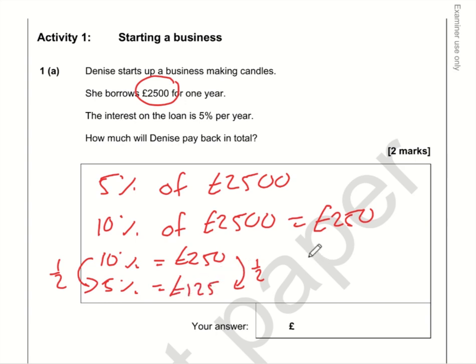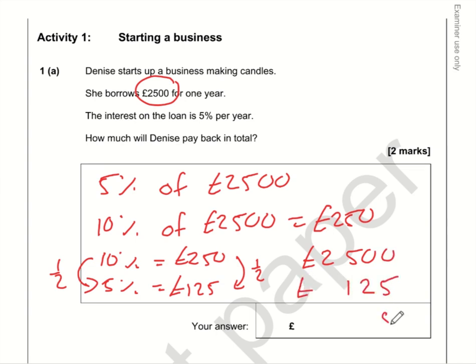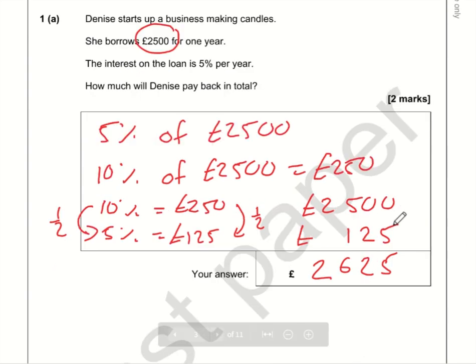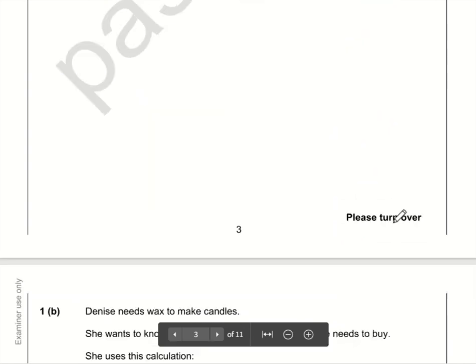So she needs to pay back the loan plus £125 of interest, so that is £2,625 to repay.